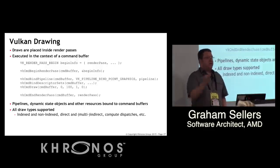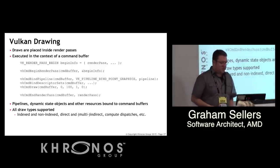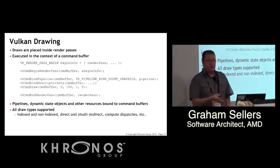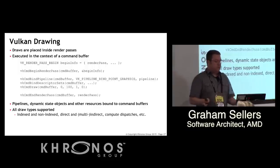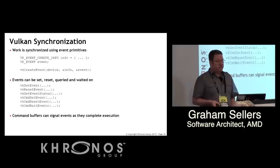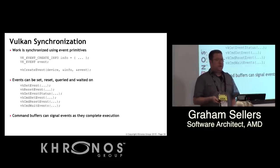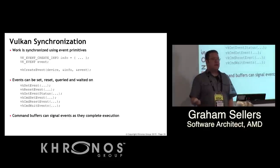Draws are always inside render passes. You begin a render pass in the command buffer, bind pipeline, bind state, bind descriptor sets, do your draw, then end the render pass. Everything is bound into a command buffer — there's no state, no context; the closest thing to a context is a command buffer. All draw types from GL — indexed and non-indexed draws, indirect draws, and compute dispatches — are supported. The driver may track redundant state within a command buffer, but the command buffer stands alone — there's no inheritance of state between command buffers.